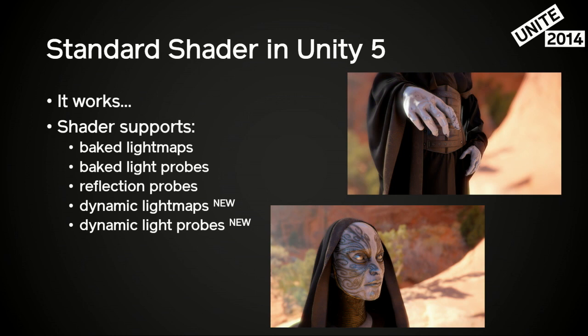Just a moment ago, Ray was talking about the standard shader in 5.0. This entire system is tightly integrated with the standard shader. The standard shader can use the baked lightmaps that Enlighten produces. It can also use the light probes in the case of dynamic objects, and of course it works with reflection probes, and now with the new things like dynamic lightmaps and dynamic light probes.